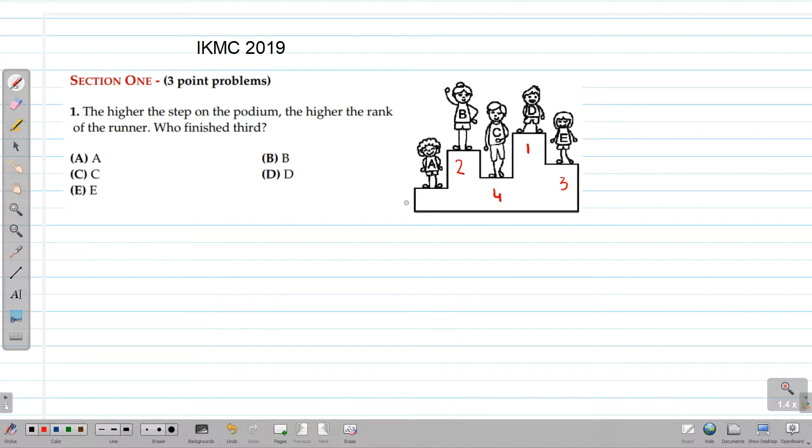4. The last runner on the podium is A, so his rank is 5. The question asks who finished third, so here we can see that runner E finished third. So the